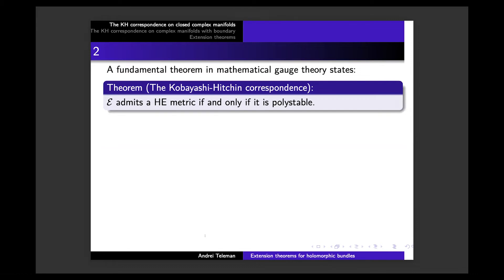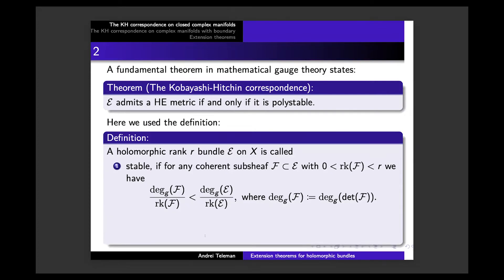A fundamental theorem in mathematical gauge theory states that E admits a Hermitian-Einstein metric if and only if it is polystable — a notion I will define immediately.